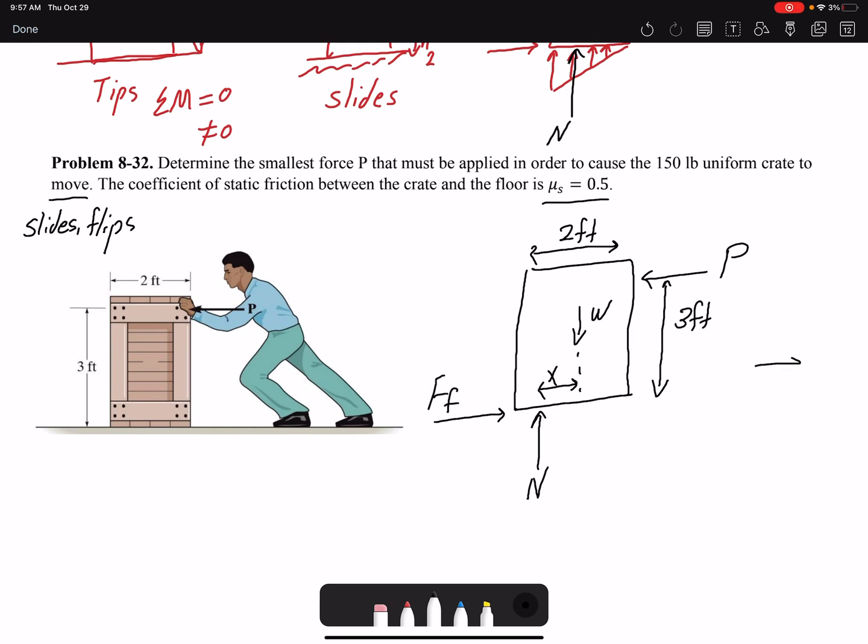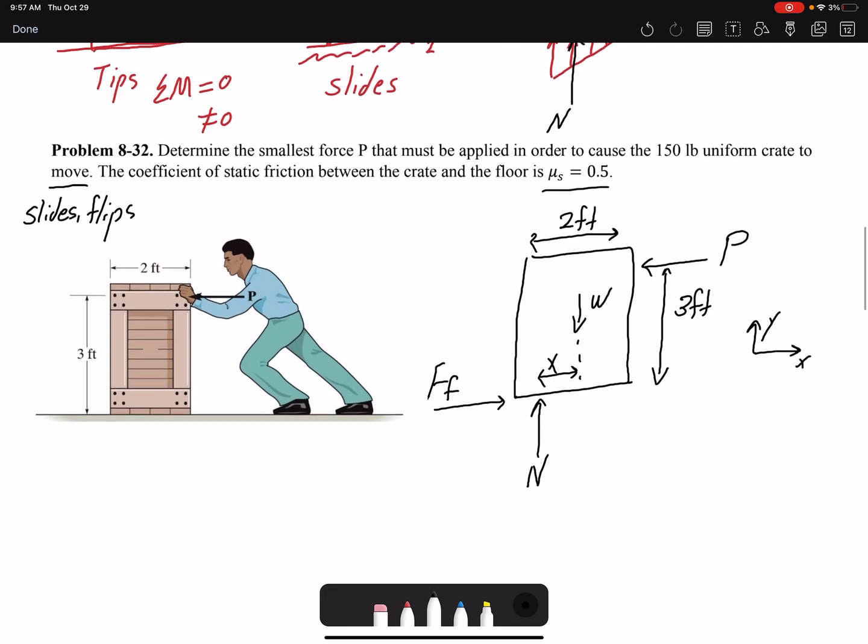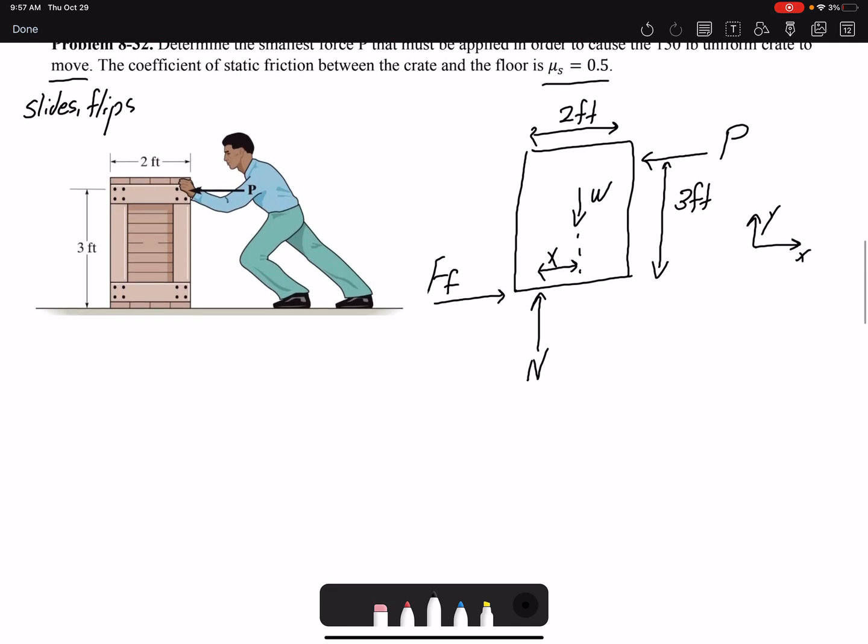So here is three feet, the width would be two feet, and I have the friction force. If I have x and y as my coordinate, I can write summation of forces and moment to see whether this box will move or not. But the movement, as we discussed, can happen in two forms: sliding or flipping.